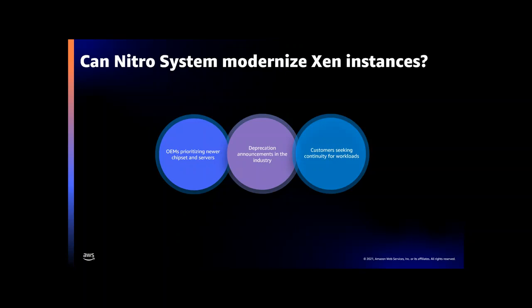At the same time, customers understand that those previous generation instances — the Xen instances — are hosted on physical hardware running in physical AWS data centers, and that hardware has a finite lifetime. This has also been a concern for us, with Xen instances using older generation hardware and OEMs reducing the production of previous generation chipsets and components to focus on new technology. It's becoming increasingly challenging to offer the same elasticity, scalability, and availability that customers expect from EC2. Customers have also communicated increasing concerns about the longevity of infrastructure products and services due to deprecation announcements from other cloud providers.